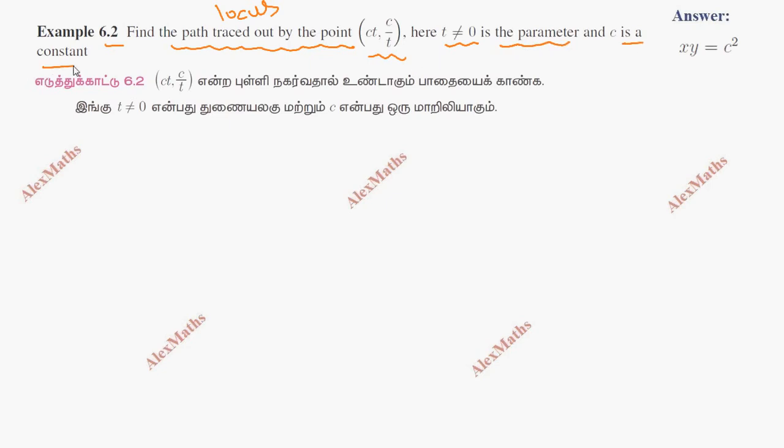C is a constant. T is a parameter, a varying quantity. Eliminate. x equals ct, y equals c over t.